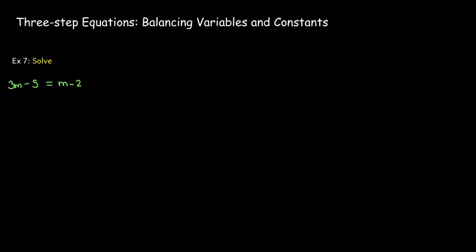Sometimes there are variables on both sides of the equation and constants on both sides. I prefer to balance the variables first, and ideally keep a positive coefficient on the variable to minimize mistakes. In example 7, I start by subtracting m from each side — the minus sign goes with the 2, so I'm left with negative 2 on the right-hand side. Then I add 5 to each side, giving me 2m equals 3. Dividing both sides by 2, I get m equals 3 halves.